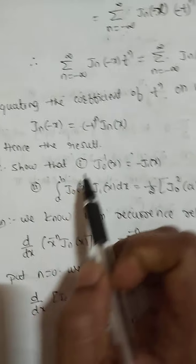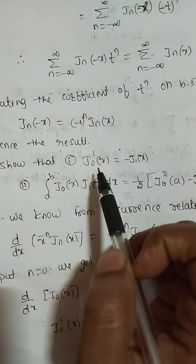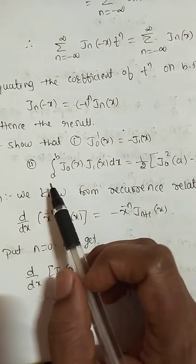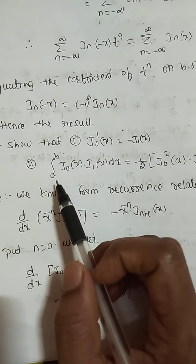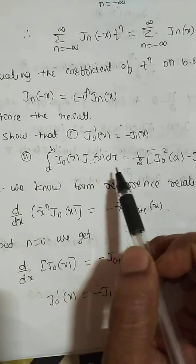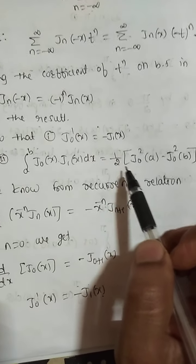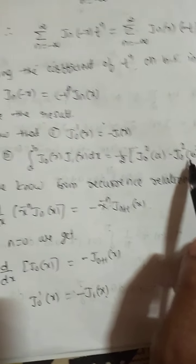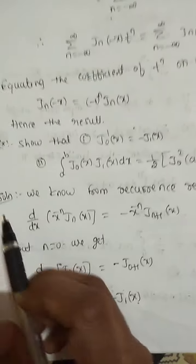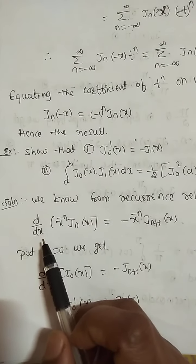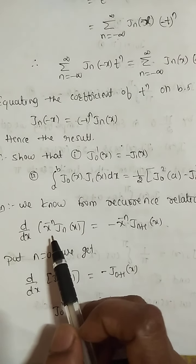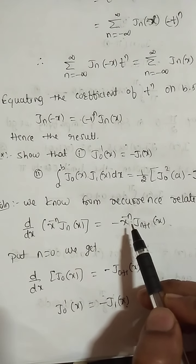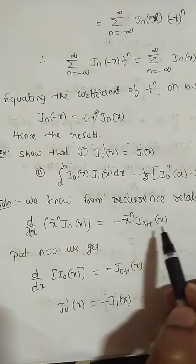Next example: show that (1) J_0'(x) equals minus J_1(x), and (2) the integral from a to b of J_0(x) · J_1(x) dx equals (1/2)[J_0²(a) − J_0²(b)]. Solution: we know from the recurrence relation that d/dx of [x^(−n) J_n(x)] equals minus x^(−n) J_{n+1}(x).